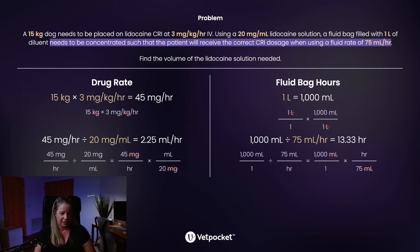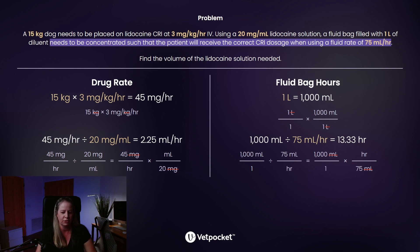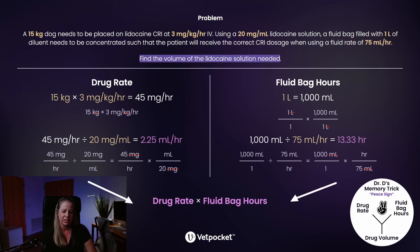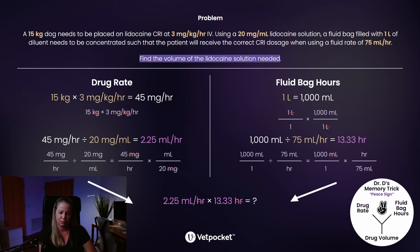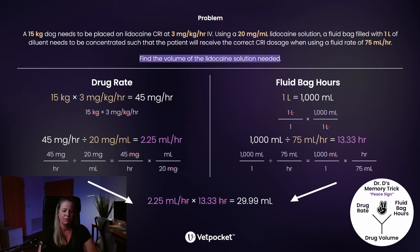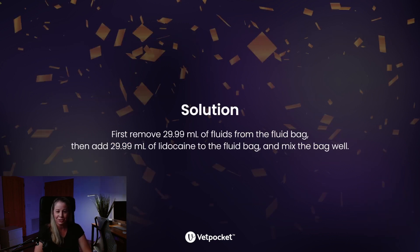Now we have the drug rate of 2.25 milliliters per hour and the fluid bag duration of 13.33 hours. Multiply them together: 2.25 mL/hr × 13.33 hours. The hours cancel out, leaving you with 29.99 milliliters. That is the solution — approximately 30 milliliters of lidocaine solution needed.